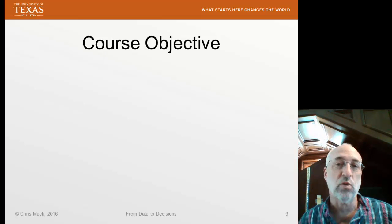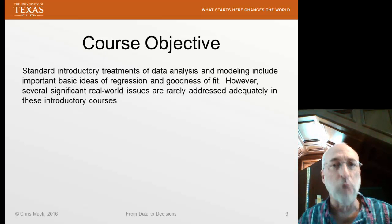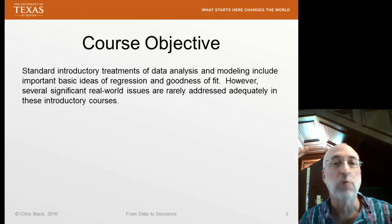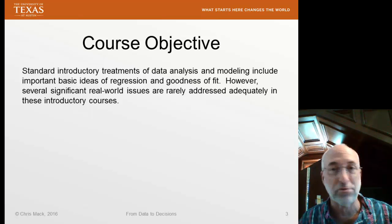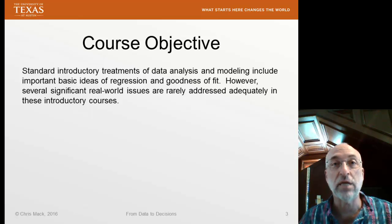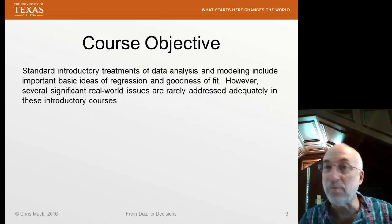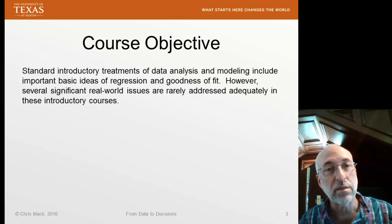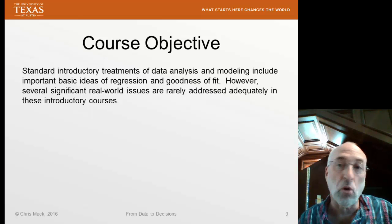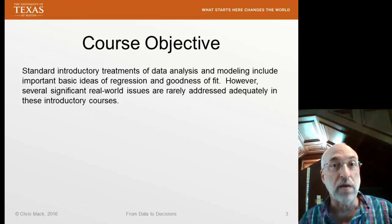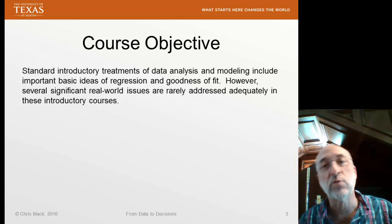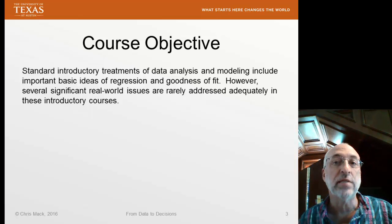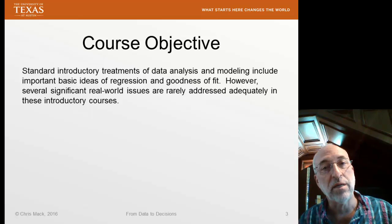So let's talk about what this course is about. First of all, this is not an introductory course on probability and statistics. Almost every engineer or scientist as an undergraduate will take a one-semester, three-credit hour course on probability and statistics. Everybody needs that — it's kind of a basic to even understand what science and engineering is all about. But in my opinion, that is not enough to actually work with data in the real world. Instead, we need more than just the basics.